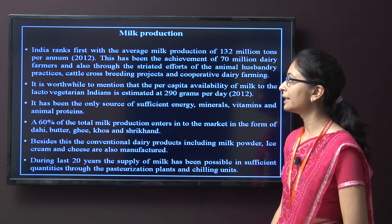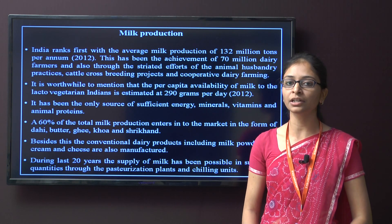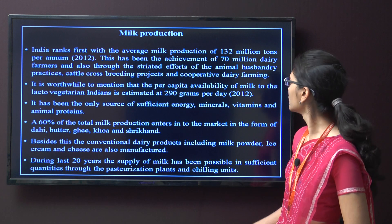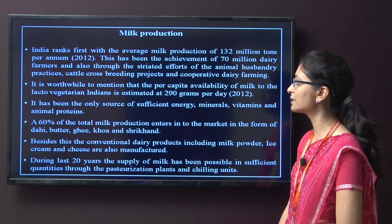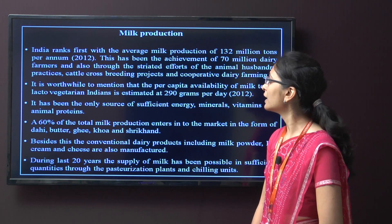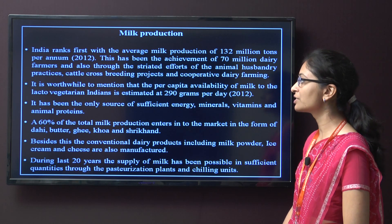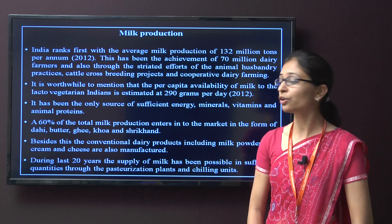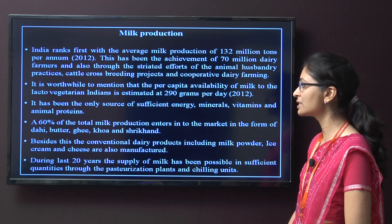First is milk production. India ranks first in milk production at about 132 million tons per annum in the year 2012. This has been the achievement of 70 million dairy farmers through state efforts of animal husbandry practices, cattle cross-breeding projects, and cooperative dairy farming. The per capita availability of milk to the lacto-vegetarian Indian is estimated at around 290 grams per day in 2012. It has been the only source of sufficient energy, minerals, vitamins and animal proteins.